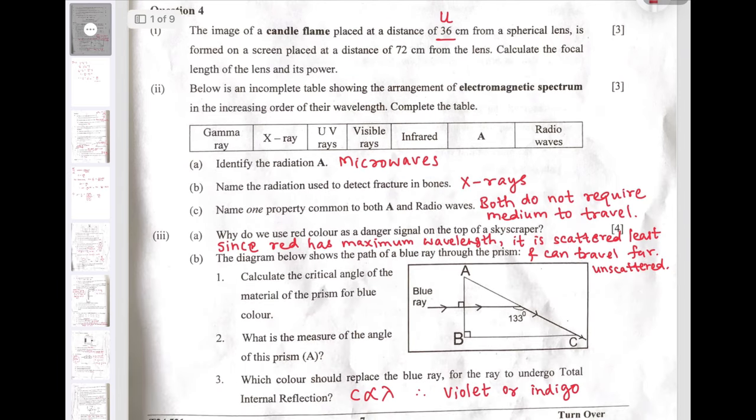Question 4 second part: Below is an incomplete table showing the arrangement of electromagnetic spectrum. We need to identify the radiation A, that is microwaves. Name the radiation used to detect fracture in bones: X-rays are used for that purpose. Name one property common to both A and radio waves: they do not require medium to travel. You can also write that all electromagnetic waves travel with the same speed in vacuum.